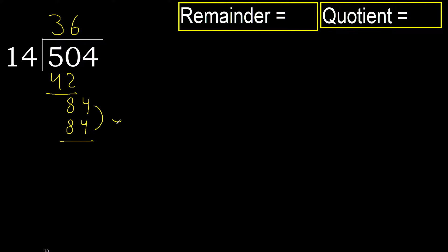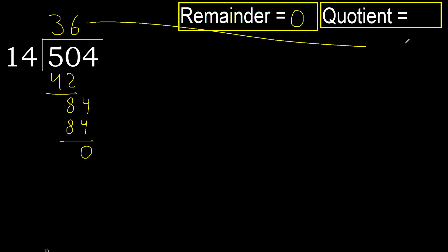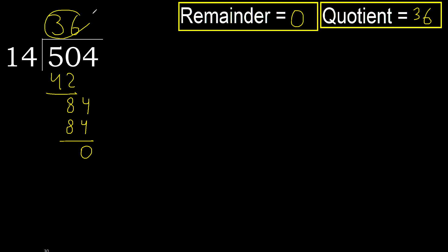0. Next, there is no number, therefore finish it. 540 divided by 14 is 36.